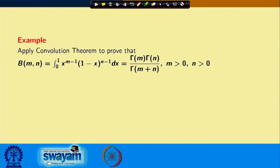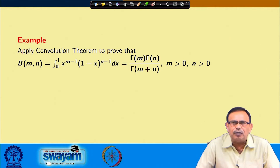In this particular lecture, we are going to find the solution of some integrals using the concept of Laplace transform. The first example is to apply the convolution theorem to prove the Beta function. Beta(m,n) is a well-known function taught in the first years of engineering courses. The Beta function β(m,n) equals the integral from 0 to 1 of x^(m−1) times (1−x)^(n−1) dx, and we want to show this equals Γ(m)Γ(n)/Γ(m+n), where m > 0 and n > 0.